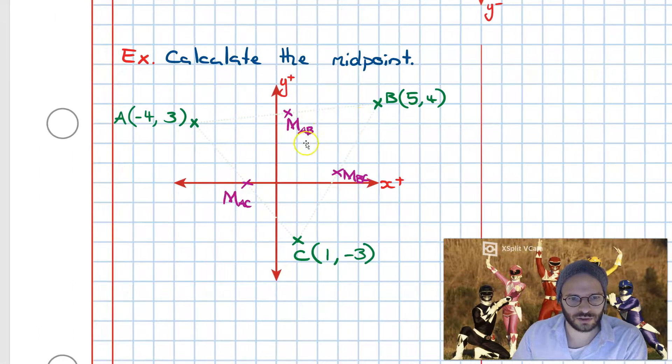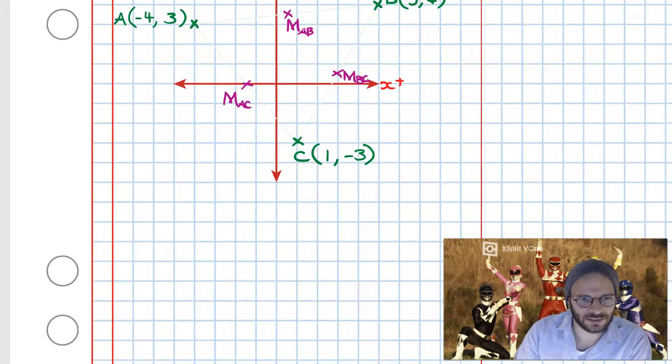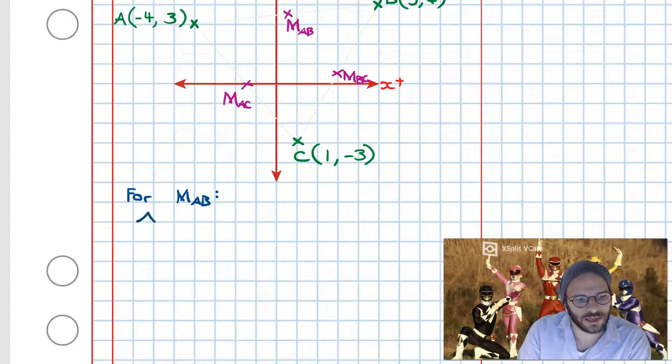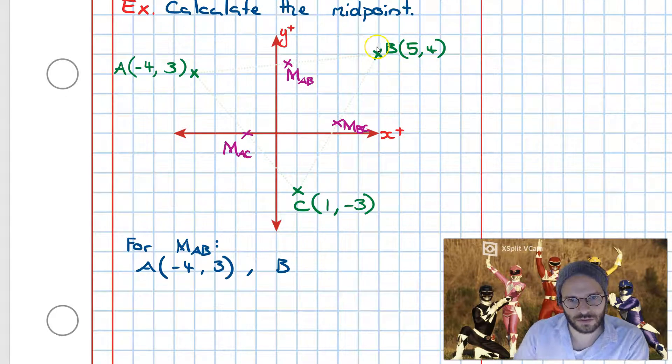Now what we're going to do is we'll start off with coordinate M, so M_AB. So writing this out, we're going to get for M_AB, for the midpoint of A, B, we're going to write out the coordinates of A, that's minus 4 and 3. Then we're going to write the coordinates of B, and if we look up, the coordinates are 5 and 4.